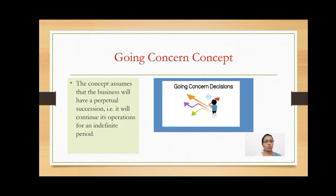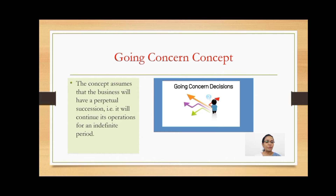Moving toward the next is the Going Concern Concept. This concept assumes that the business will have a perpetual succession — that is, it will continue its operations for an indefinite period. It is the basic assumption that the business is a going concern and will not be dissolved in the nearby future. As per this concept, we make credit transactions — we give credit to our customers by assuming that our business will continue for a very long period and we can recover the money in the future.